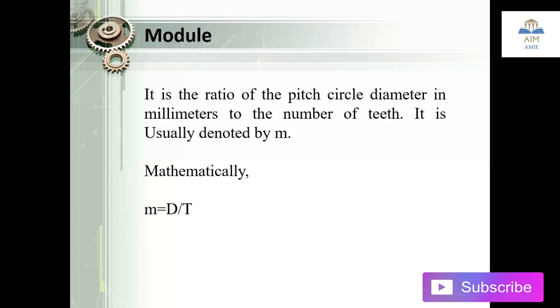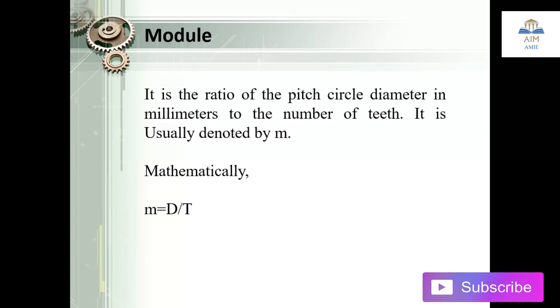The next one is the module. The module is the ratio of the pitch circle diameter in millimeters to the number of teeth. It is usually denoted by M. Mathematically, M equals D divided by T. The module is inversely proportional to the diametral pitch.